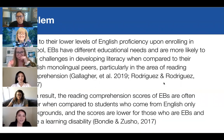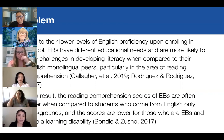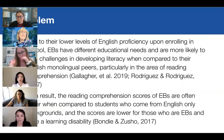Due to lower levels of English proficiency upon enrolling in school, emergent bilinguals have different educational needs and are more likely to face challenges in developing literacy when compared to their English monolingual peers, particularly in the area of reading comprehension. As a result, the reading comprehension scores of emergent bilinguals are often lower compared to students from English-only backgrounds, and even lower for those emergent bilinguals who also have a learning disability.